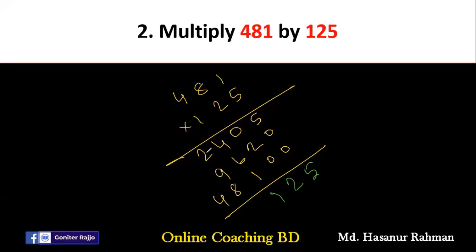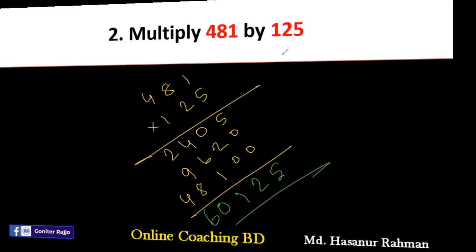6 plus 4 is 10 plus 1 is 11. We have to carry 1. 2 plus 1 is 3. 3 plus 9 is 12. 12 plus 8 is 20. We carry 2 to 4. 2 plus 4 is 6. So the answer will be 60125.